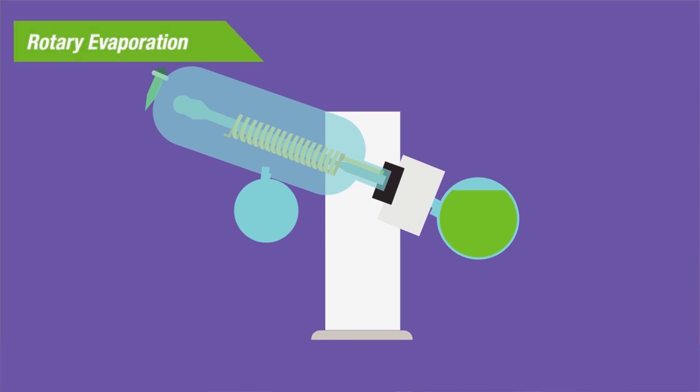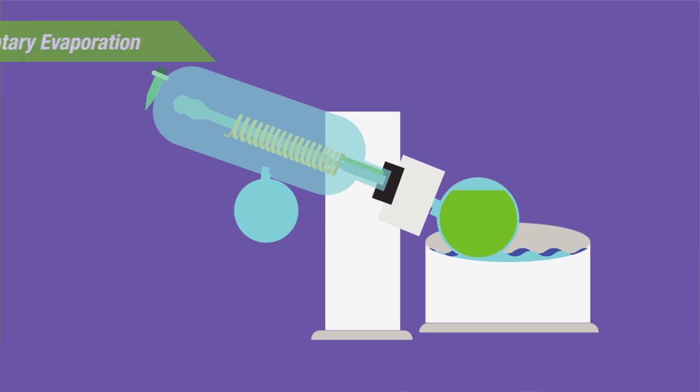With rotary evaporation, the lab tech places a flask into a heated water bath connected to a vacuum, allowing for oxygen to be released. From there, the liquid goes into a catch basin.